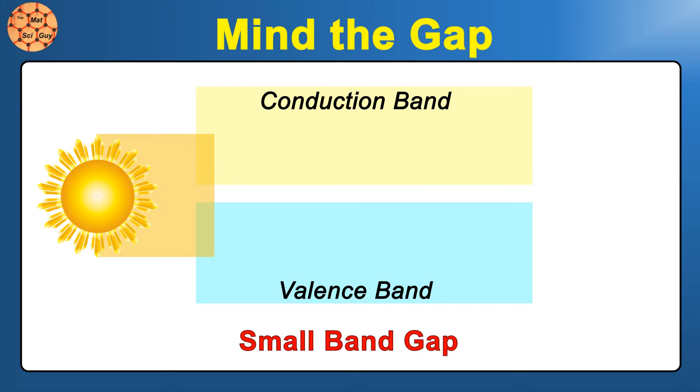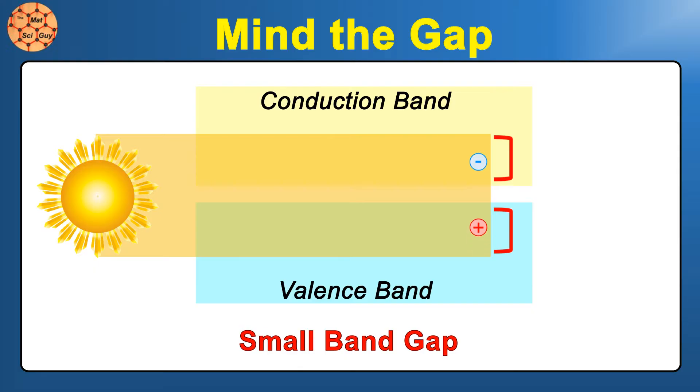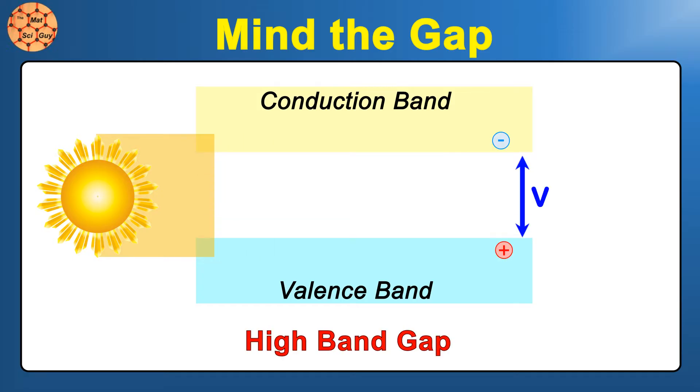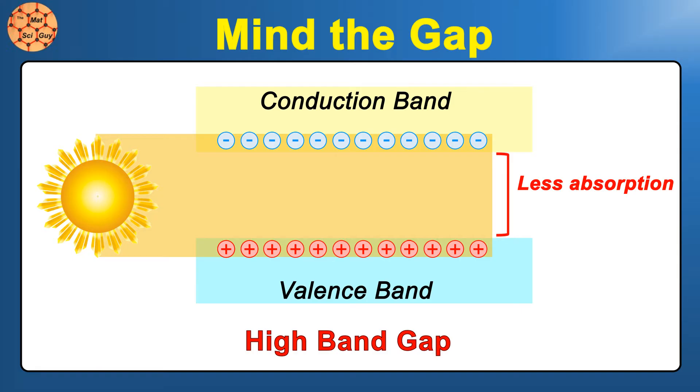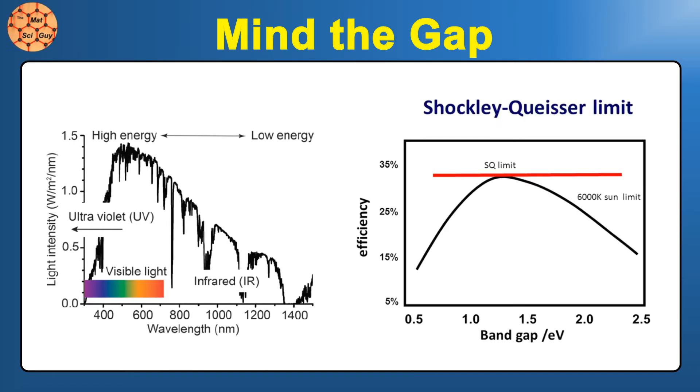You can probably see the big trade-off starting to take shape now. If we have a small bandgap material, we absorb more total light and generate more current, but we lose more energy to thermalization, reducing our output voltage. If we have a high bandgap, we have a higher output voltage since the absorbed electrons don't lose as much potential energy, but we miss out on absorbing a lot of the lower energy light, resulting in lower current.